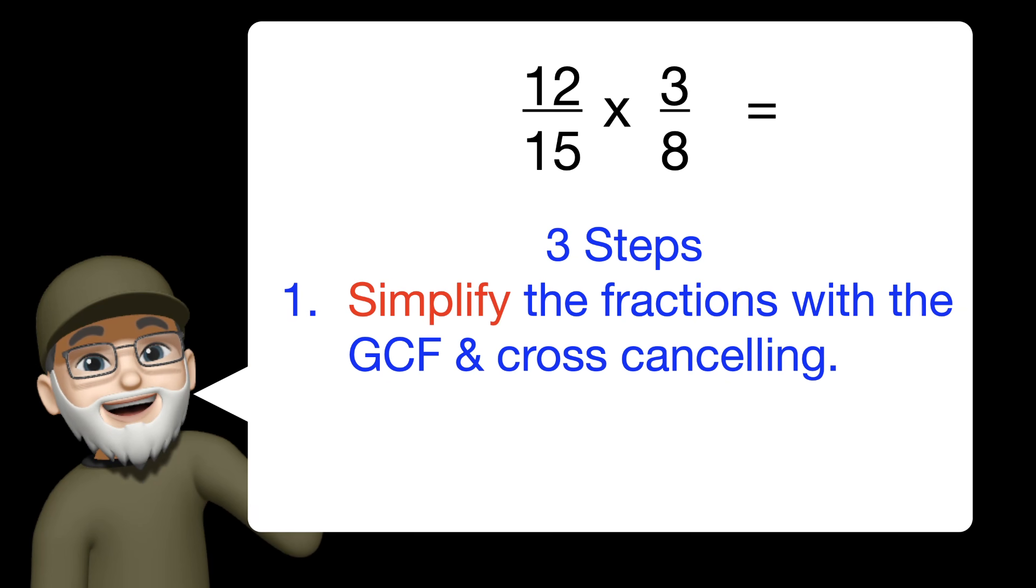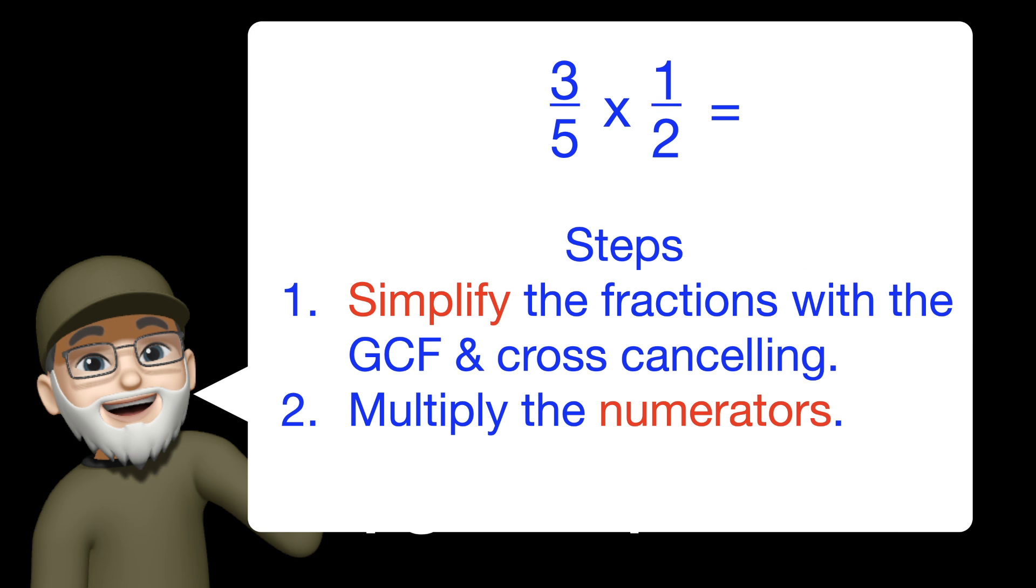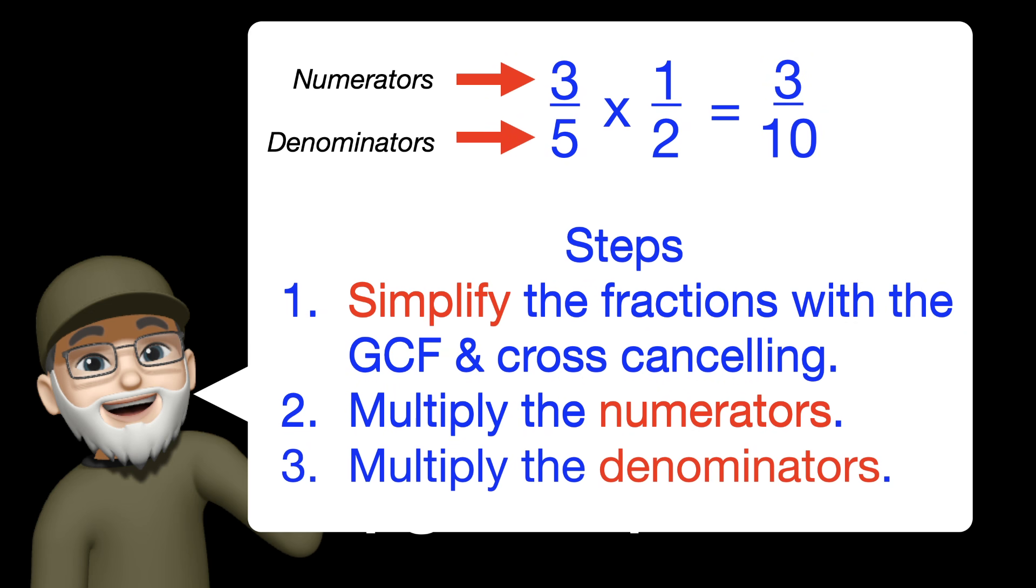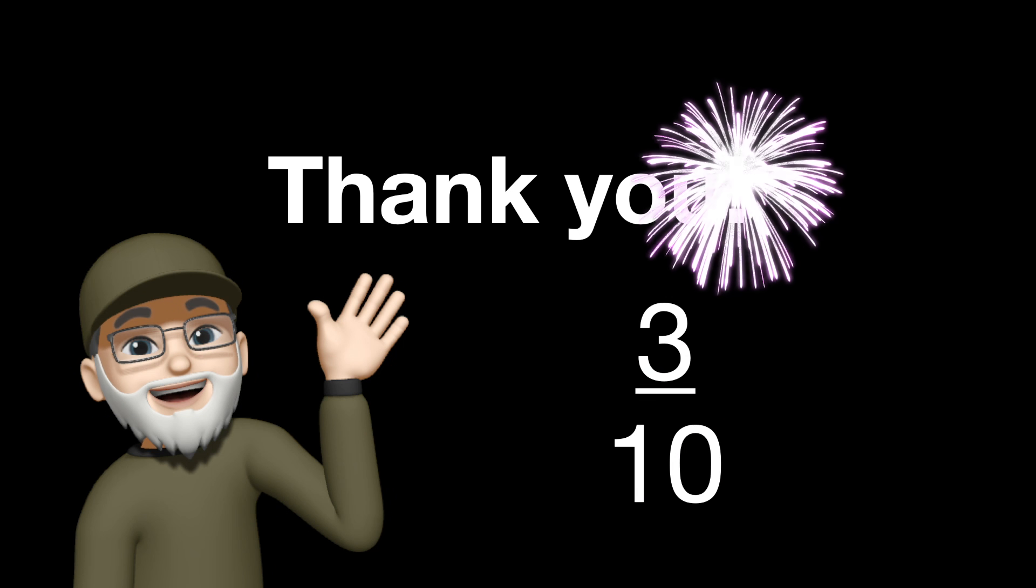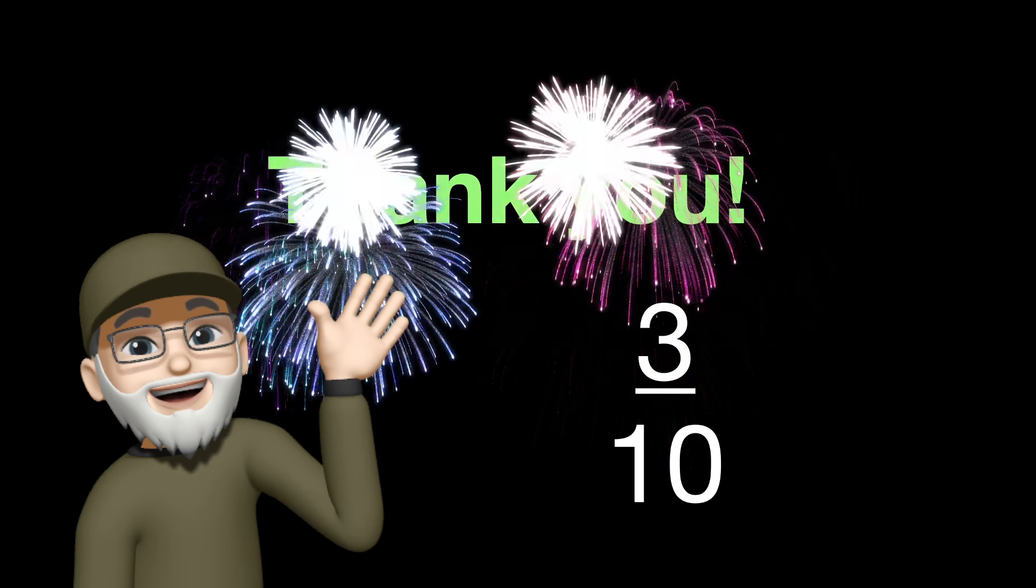Okay, let's review. For problems like this, there's three steps. We simplify the fractions and use your greatest common factor and cross-canceling. Then we rewrite and multiply the numerators on top. And then last, multiply the denominators on the bottom. If you made it this far, great job. Thank you so much. Keep practicing and we hope to see you on the next lesson.